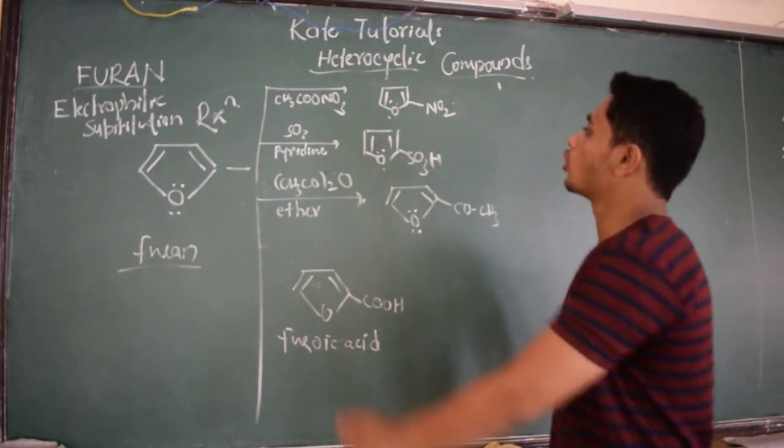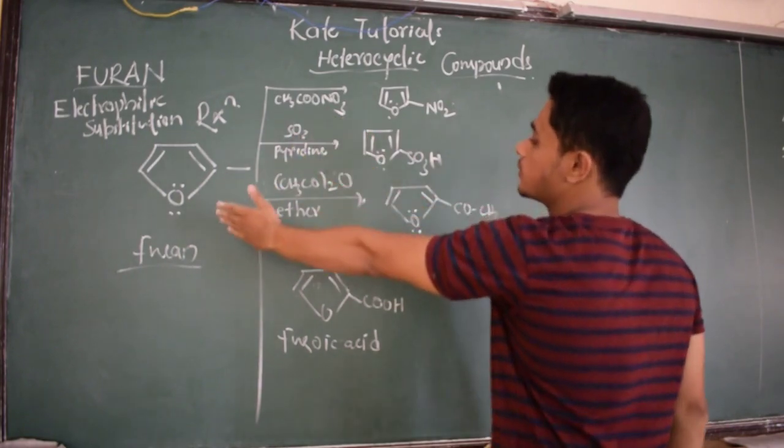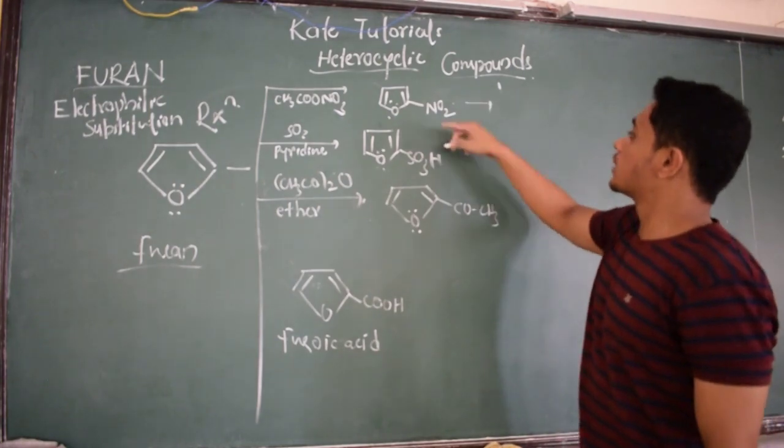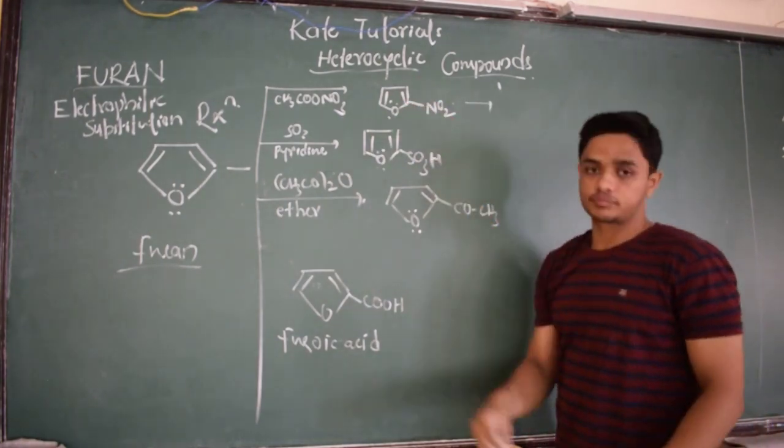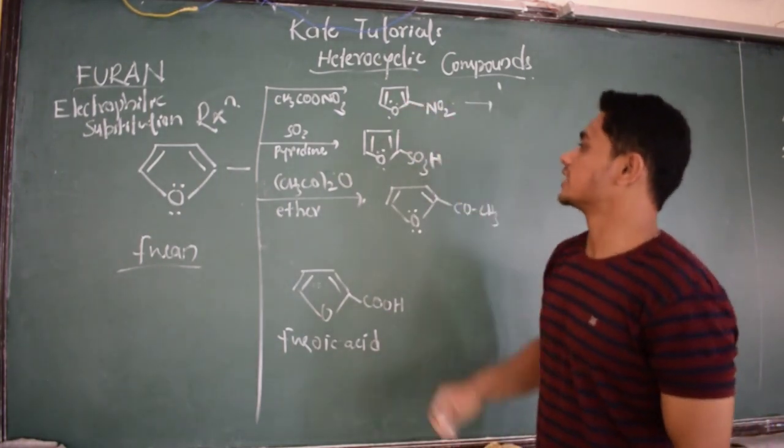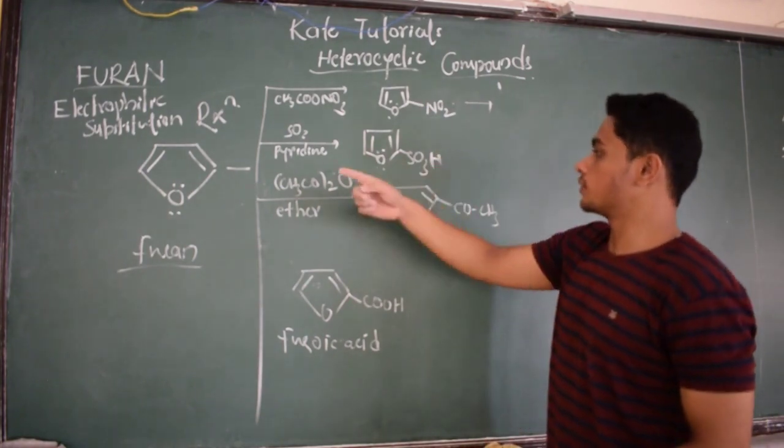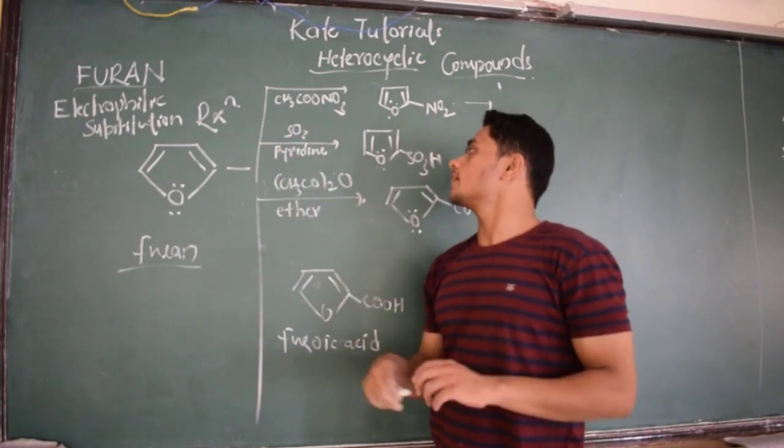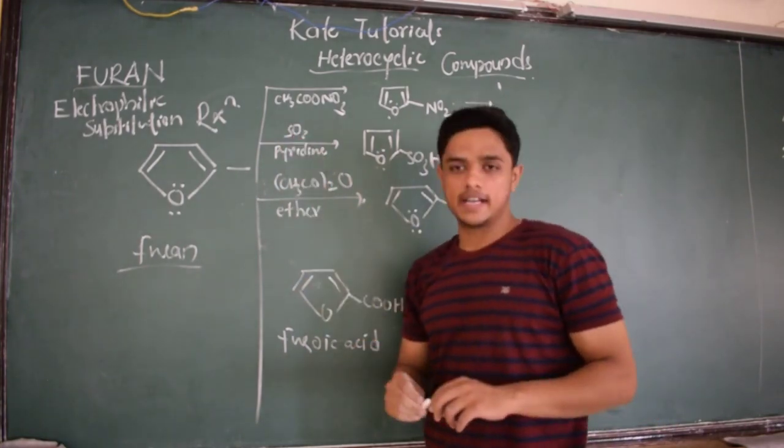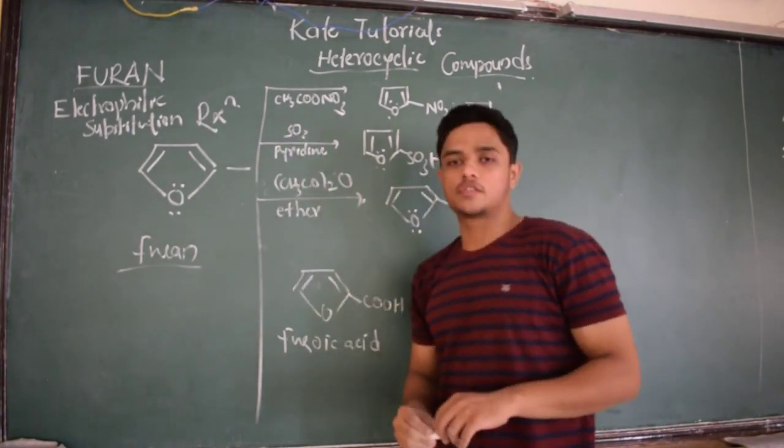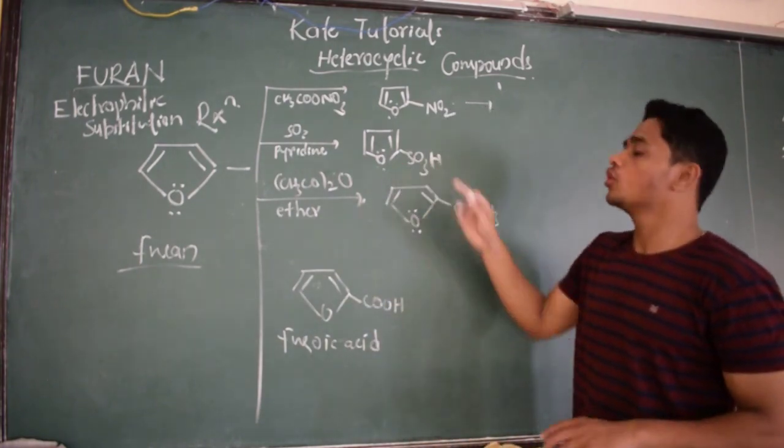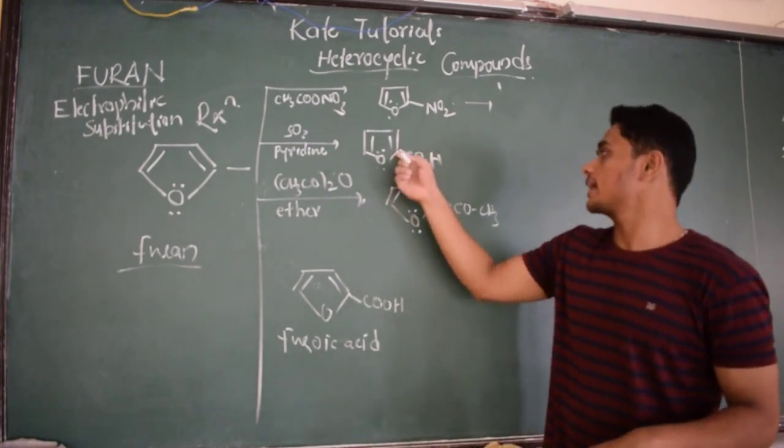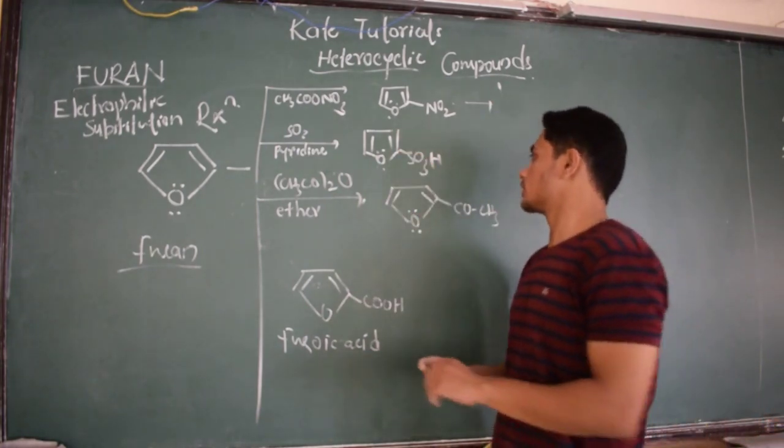This is about electrophilic substitution reaction. See, here I have furan and here it is CH3COONO2. If I make furan react, I am going to get 2-nitrofuran - that is nitration. If SO3 in presence of pyridine as solvent reacts with furan, I am going to get furan-2-sulfonic acid. The electrophile is going to get attached to the second position - that is sulfonation.